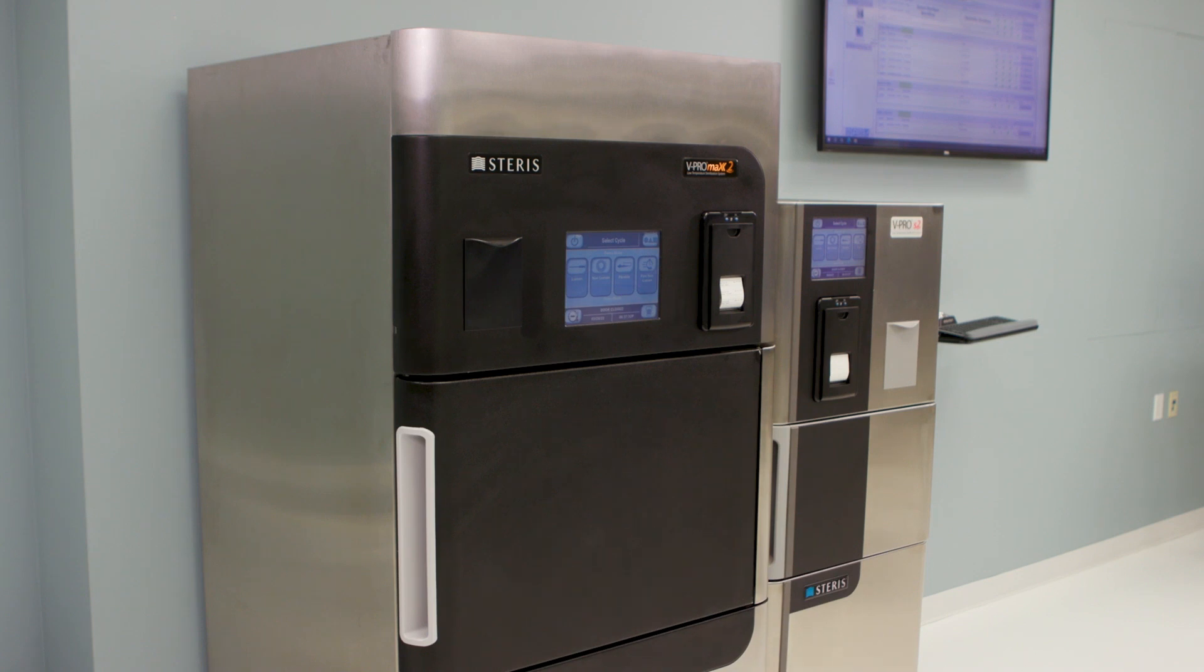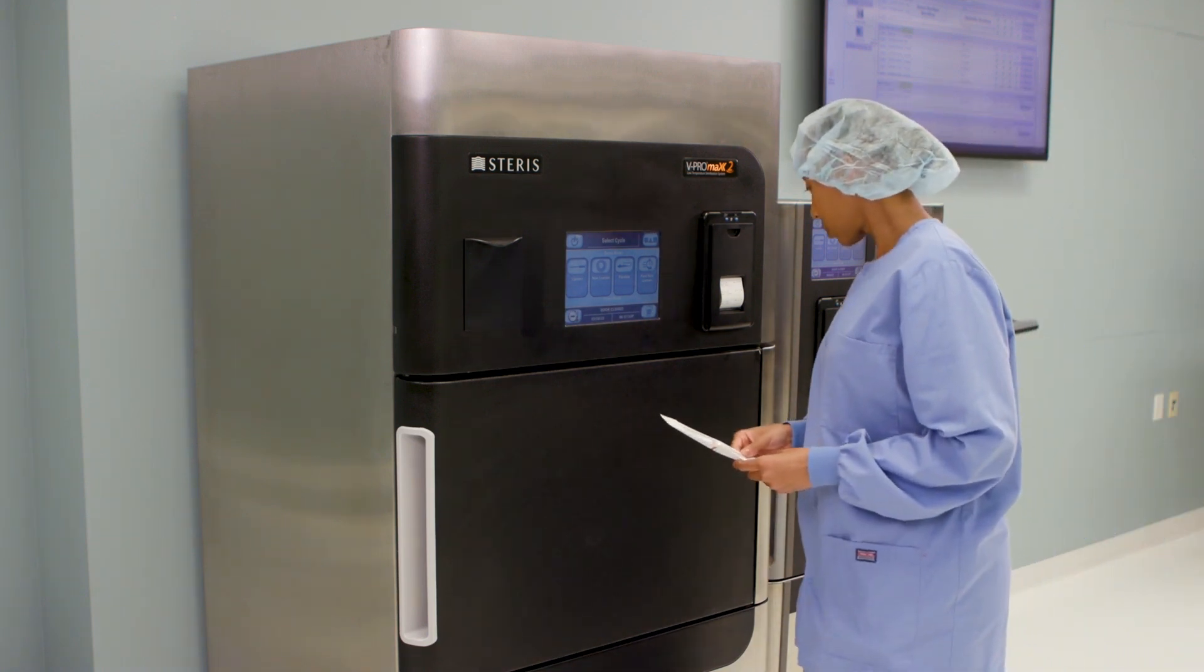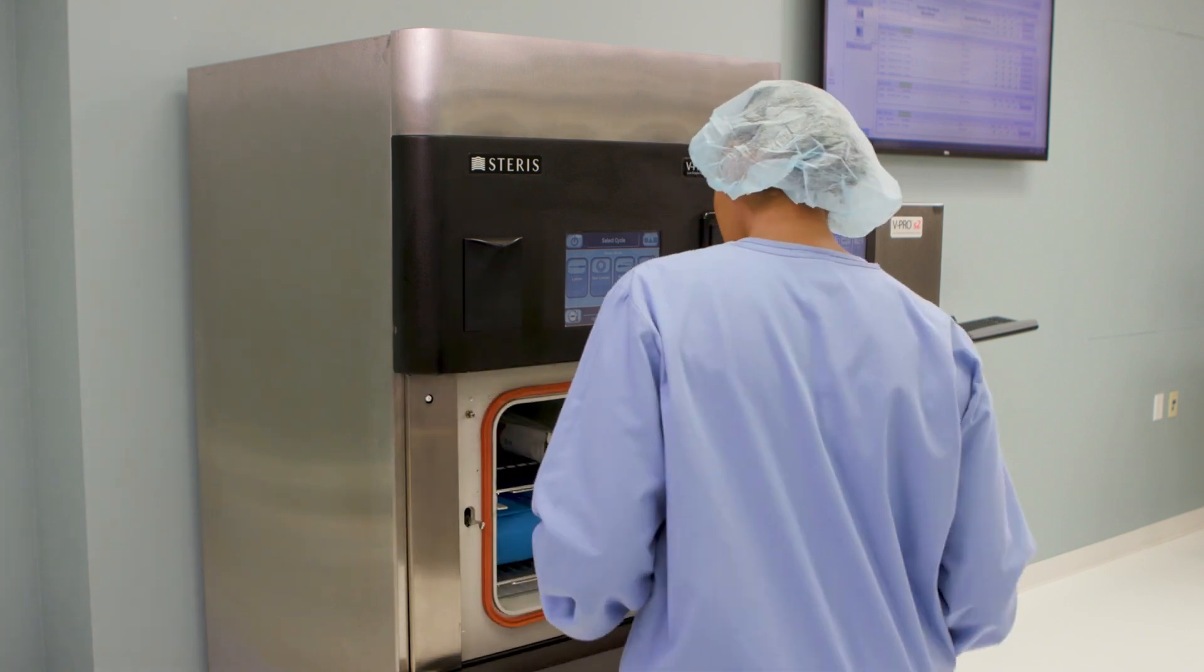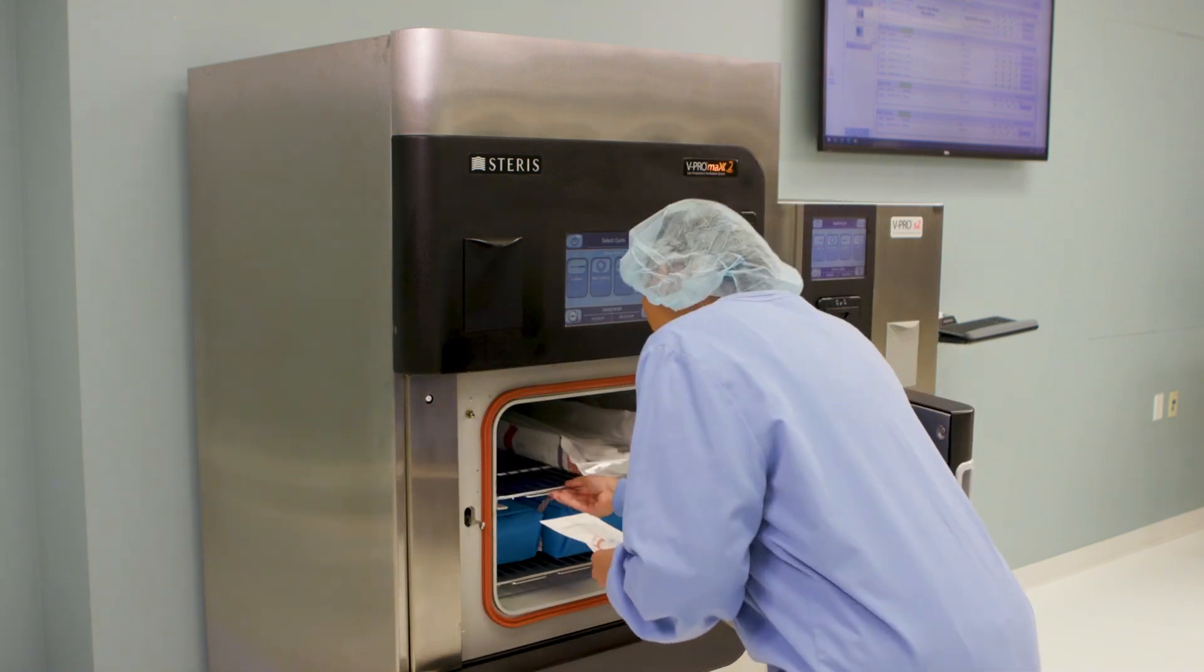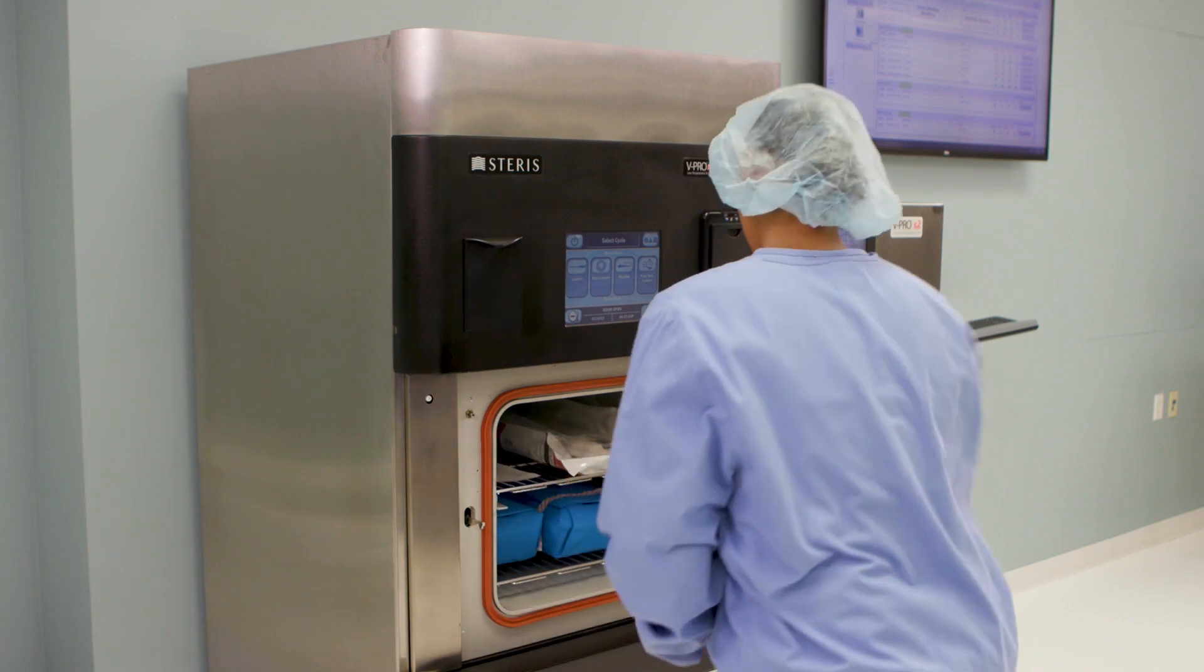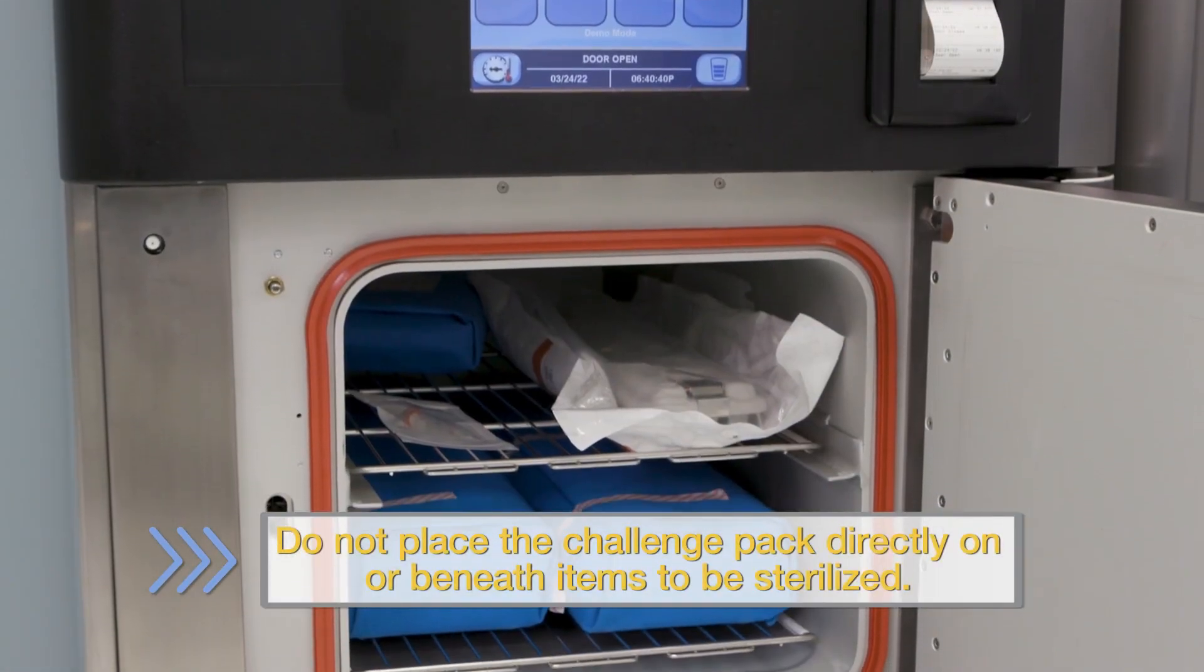Place the pack in the most challenging location of the sterilizer. In VPRO sterilizers, this is the center of the top shelf or close to the door on the bottom shelf if the top shelf is not installed. In STERAD sterilizers, this is on the bottom shelf close to the rear of the sterilizer.